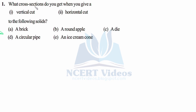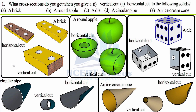Question number one: what cross sections do you get when you give a vertical cut and a horizontal cut to the following solids — a brick, a round apple, a die, a circular pipe, and an ice cream cone? In this question, we are required to perform two cuts, that is vertical cut and horizontal cut, and both cuts are very simple.